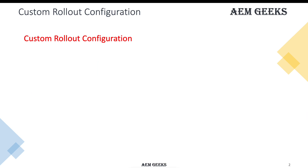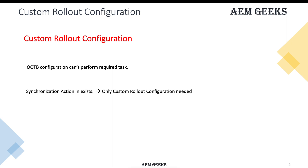I'll talk about custom rollout configuration for when your existing out-of-box rollout configurations are not enough to perform your desired task. There are two scenarios to consider: one where a synchronization action is already available in AEM and you just need to create a rollout configuration without any code, and another where the synchronization action is not available out of the box and you have to write backend code to create it first.